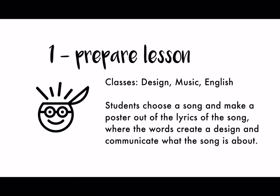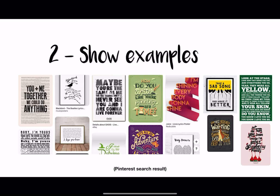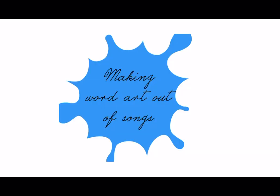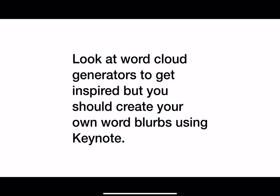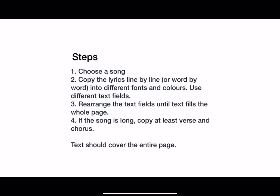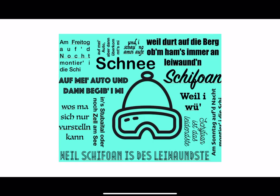Prepare the lesson by deciding how to help the students by explaining to them what their job is. I did this in design, but you can do it in music and English as well. The students should choose a song, and they could take either part of the lyrics or all the lyrics and create a nice poster out of it. I showed them some examples on Pinterest — you can use a Pinterest search just to see what kind of lyric posters are designed by other people. Then I explained what I wanted them to do by giving them instructions in Keynote as well. They used a word cloud generator to get some ideas, and I gave them an example of what I created myself so they could know what I wanted from them.